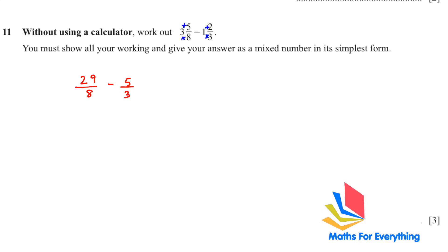After this step you need to have a common denominator. So multiply the first term by 3 and the second term by 8. So you have a common denominator now. 8 multiplied by 3 is 24. And in the numerator multiply 29 by 3, you will get 87, and 5 multiplied by 8 is 40. 87 minus 40 is 47 over 24.